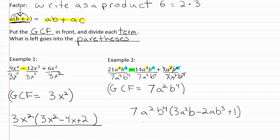So our factored form for this one is 7a²b⁴(3a²b minus 2ab³ plus 1). Whenever you go to do factoring, remember to look for a GCF, put that GCF out in front, divide it into each term, and write what is left in the parentheses.